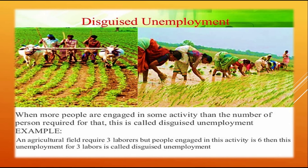As we see in this picture, an agricultural field requires just three laborers, but six people are engaged in this activity. The unemployment of those extra three laborers is called disguised unemployment.